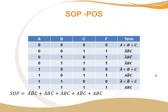Wherever we don't have zeros, we add ones — and that gives us our SOP terms. POS, we look at zeros; SOP, we look at ones. A-not, B-not, and C makes it one. A-not, B, and C-not is one. A-not, B, and C is one. And with all ones: A, B, and C — that is our SOP term.